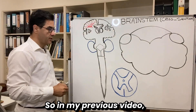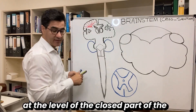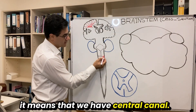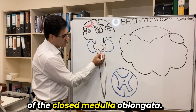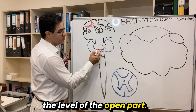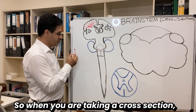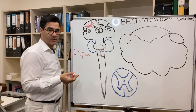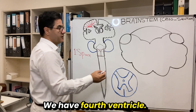In my previous video I took a cross-section at the level of the closed part of the medulla oblongata. When I say closed part it means that we have a central canal. I took a cross-section at the level of the caudal part and rostral part of the closed medulla oblongata. Now I'm going to take a cross-section at the level of the open part. When I say open part it means that instead of the central canal we have the fourth ventricle. When taking a cross-section, you should ask yourself: at this level, do we have a central canal or fourth ventricle? In the open part of the medulla oblongata we have the fourth ventricle.